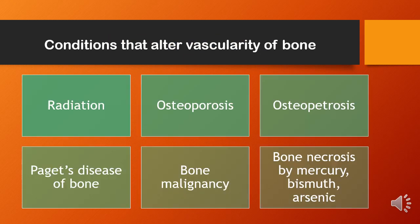Conditions that affect the vascularity of bone include radiation, osteoporosis, osteopetrosis, Paget's disease of the bone, bone malignancy, and bone necrosis by mercury, bismuth, and arsenic poisoning.